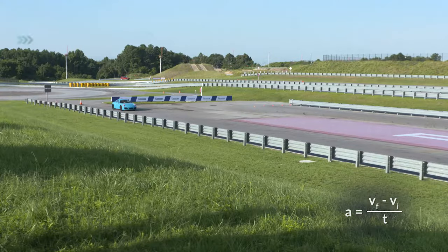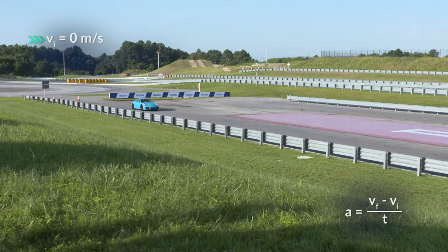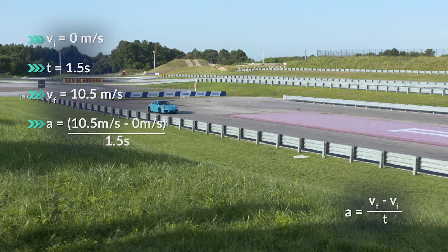And it doesn't matter if we're talking about this little Porsche or a real one on a track. The initial velocity of this car as it's standing still is zero meters per second. The driver hits the gas and it starts to accelerate. 1.5 seconds later, the final velocity of the car is 10.5 meters per second. So the acceleration will be equal to 10.5 meters per second minus zero meters per second divided by 1.5 seconds — hence, our acceleration will be 7 meters per second squared.